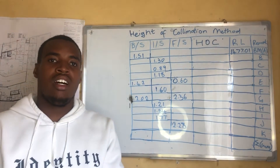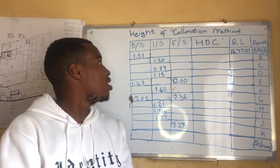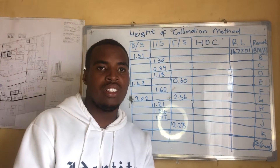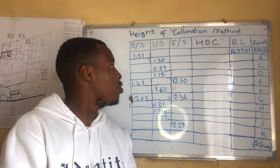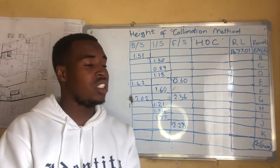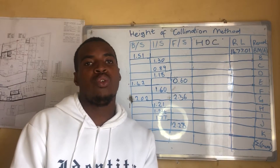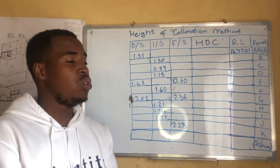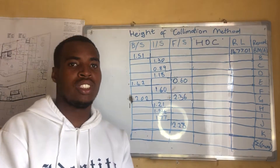Hello guys, it's Koulton once again and welcome to our part two on methods of reducing levels after doing a levelling exercise. The second method I'm going to teach you is the Height of Collimation method.